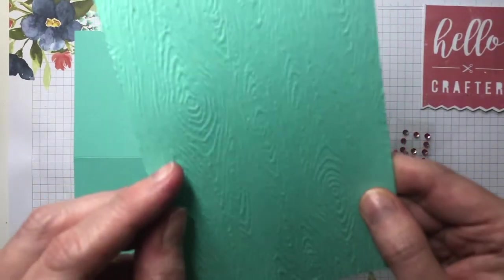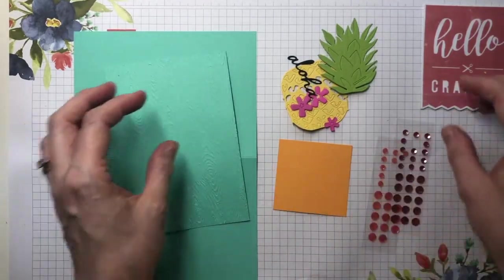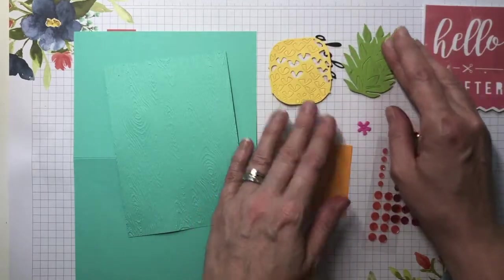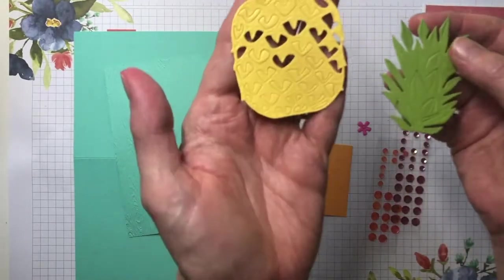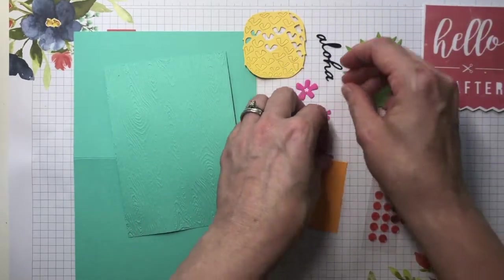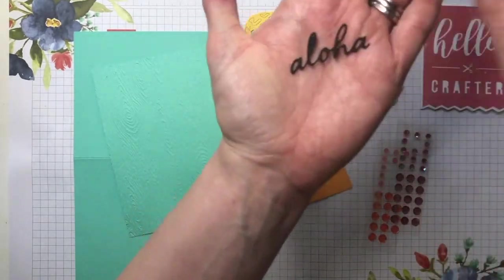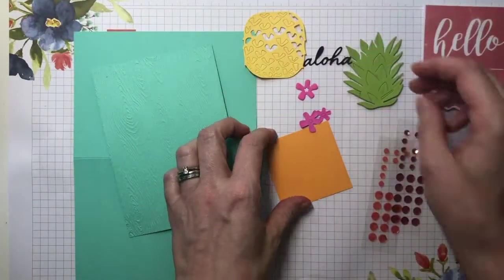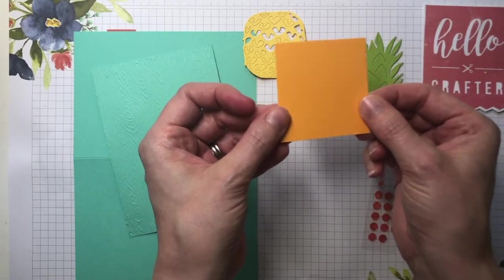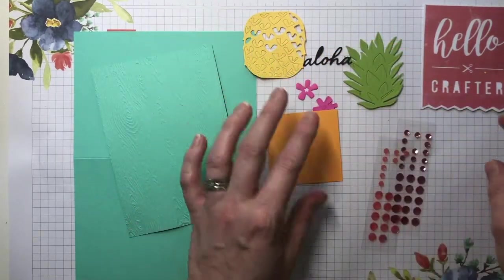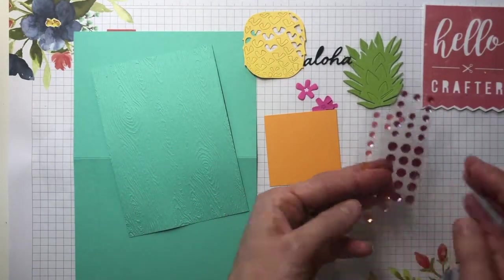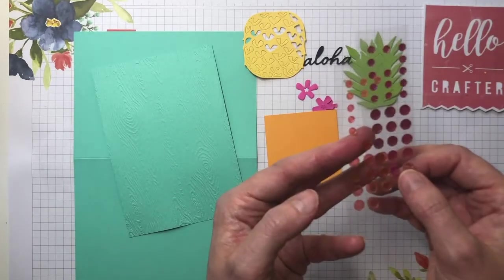You've got your die cut pieces. I've taken the pineapple and die cut this from Daffodil Delight and the leaves from Granny Apple Green, some little flowers here and you've got that lovely little greeting, aloha. I've got an extra little piece of Mango Melody cardstock which I'll show you what to do with in a second, and finally just to finish it off, some of these adhesive bat sequins.